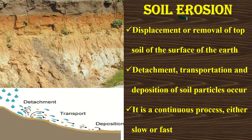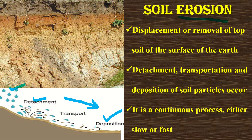This term erosion should not be confused with weathering. Weathering does not involve any movement, whereas erosion does. Water is one agent of erosion — these droplets indicate water. Water detaches the layer of soil, transports it to some other place, and finally deposits it at a completely different location. So soil erosion is the displacement or removal of topsoil from the earth's surface, involving detachment, transportation, and deposition of soil particles.